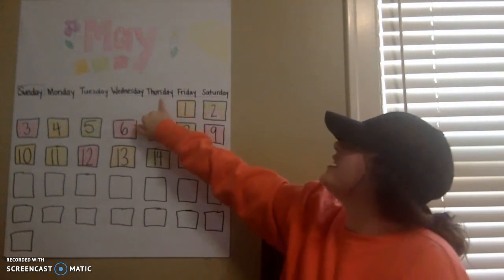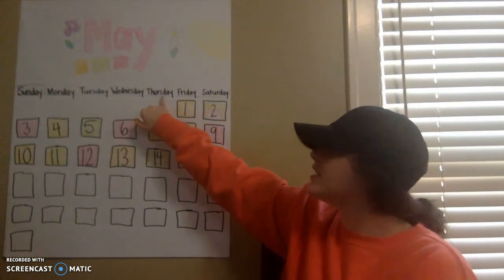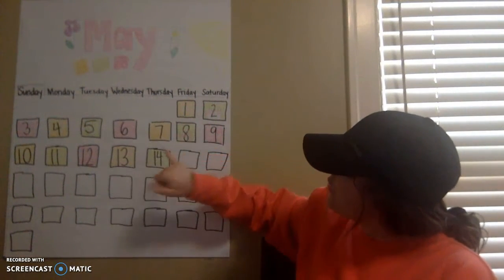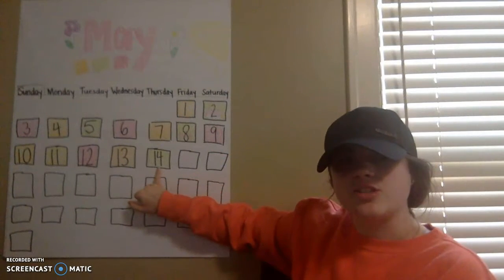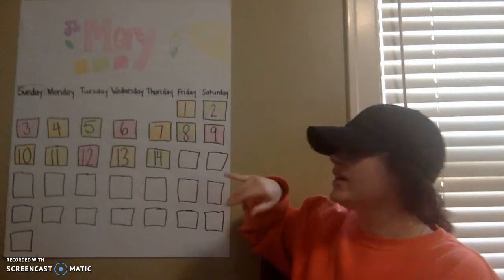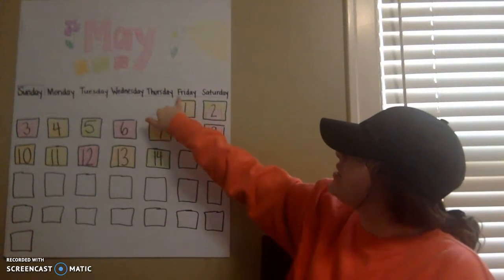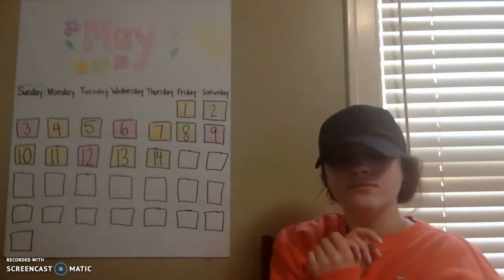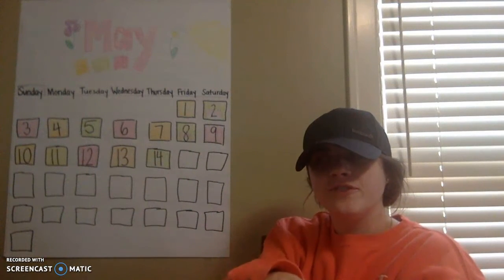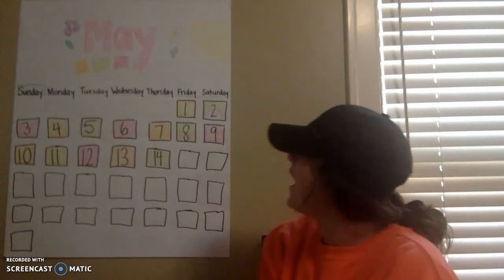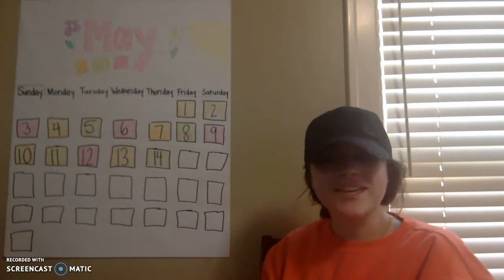Let's look at yesterday. Yesterday was Thursday. We had the number 14 yesterday, and we colored our square green. So now, if yesterday was Thursday, today is... Friday! It's Friday. Friday — that means it's the weekend. That means we go two days without school.